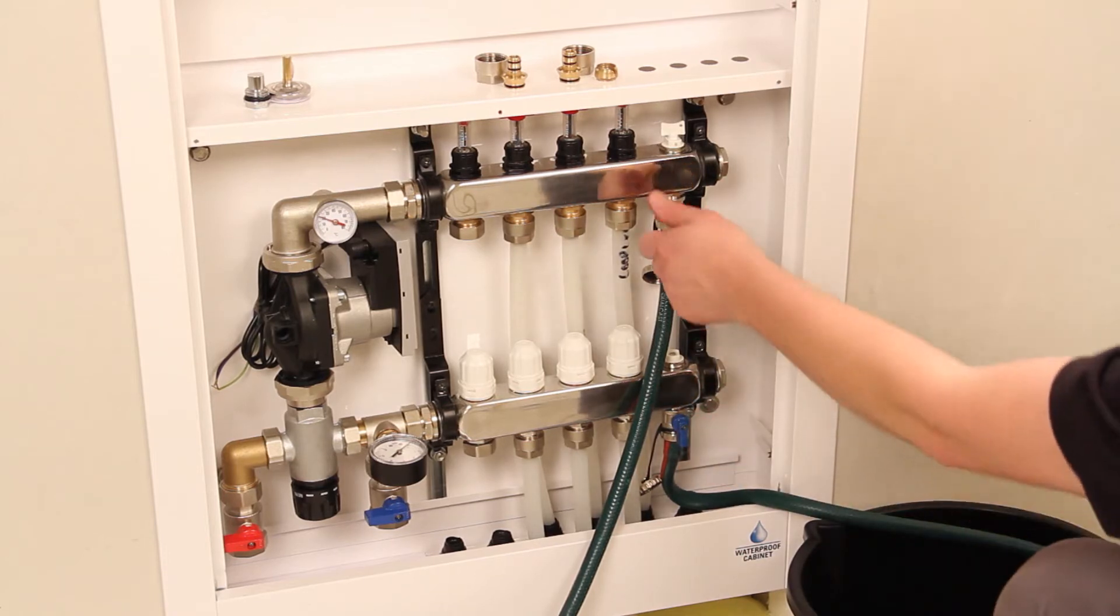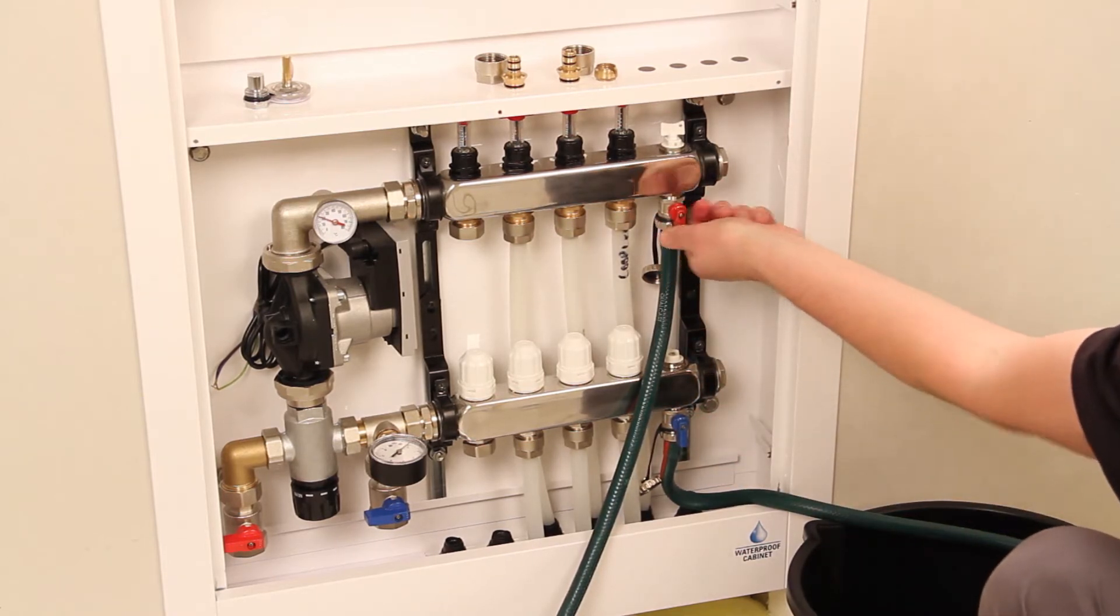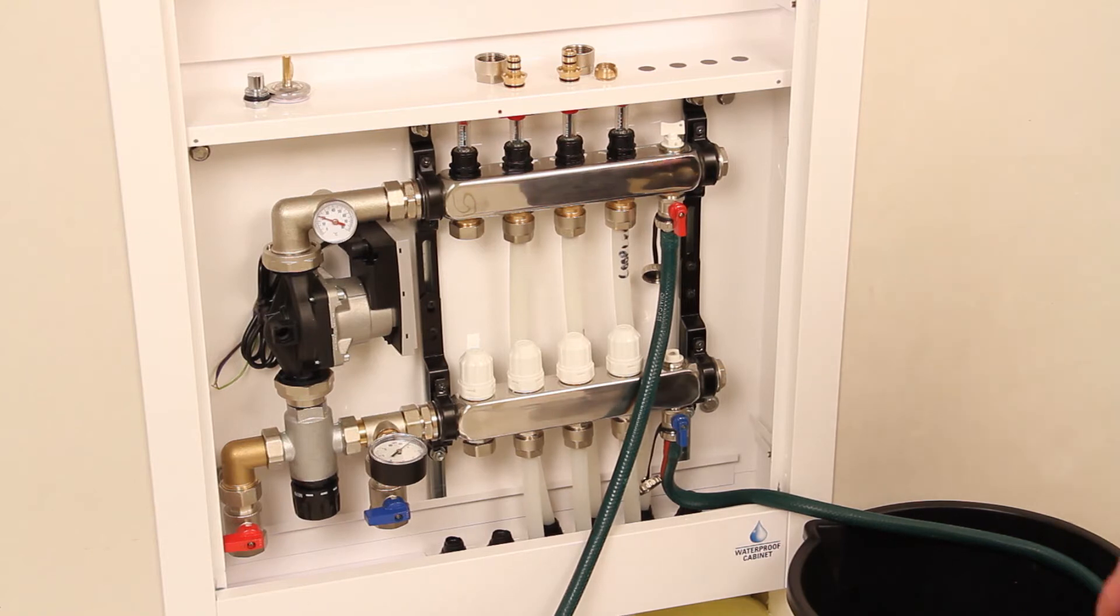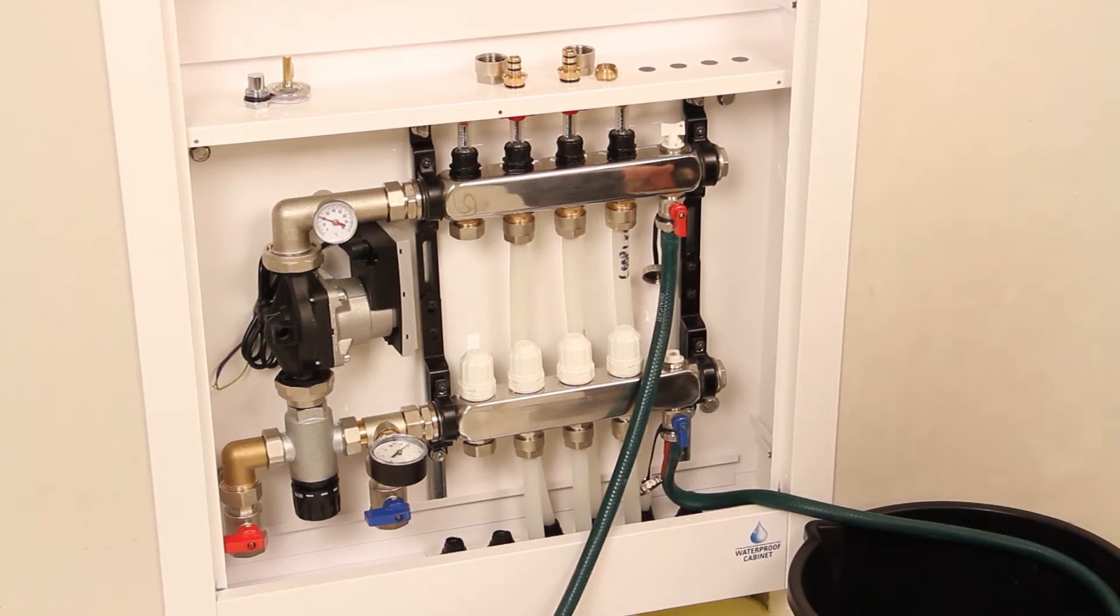Make sure the isolation valves are in the closed position, open both the flow and return drain off taps on the manifold and turn on the cold water supply hose.